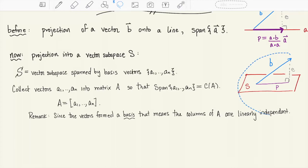In this interpretation then what is this vector p that we're trying to produce? p is really an approximation of the vector b. b doesn't live in S but we want to project it down into S.